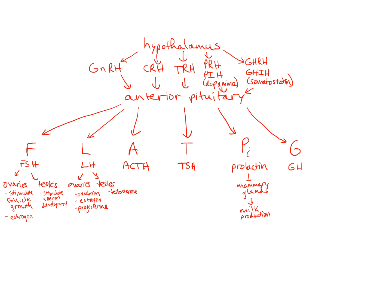I like to draw these out, and if you practice drawing these out at home without looking at your notes, you can answer any question on these. We start at the top with the hypothalamus, because the hypothalamus is pretty much in charge of the endocrine system. The hypothalamic hormones travel through the portal system to the anterior pituitary, which then tells it which hormones to release or not release.